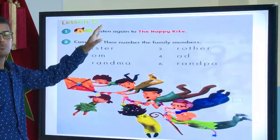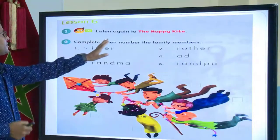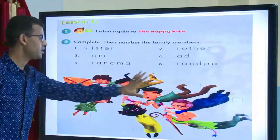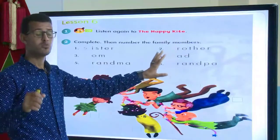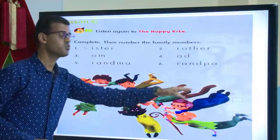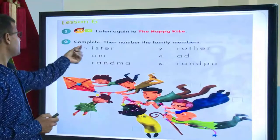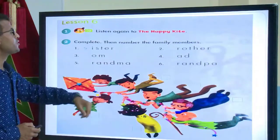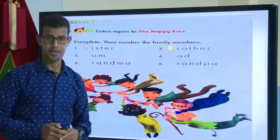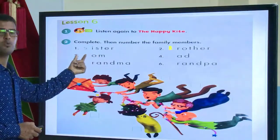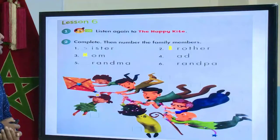Now we are going to do an exercise from lesson number five. You have to complete the family member words and then number the correct pictures. The first one is done for you — sister, the missing letter is S. Number two — can you guess? Very good, it's brother, the missing letter is B. Number three — O-M — this is mom, the missing letter is M.